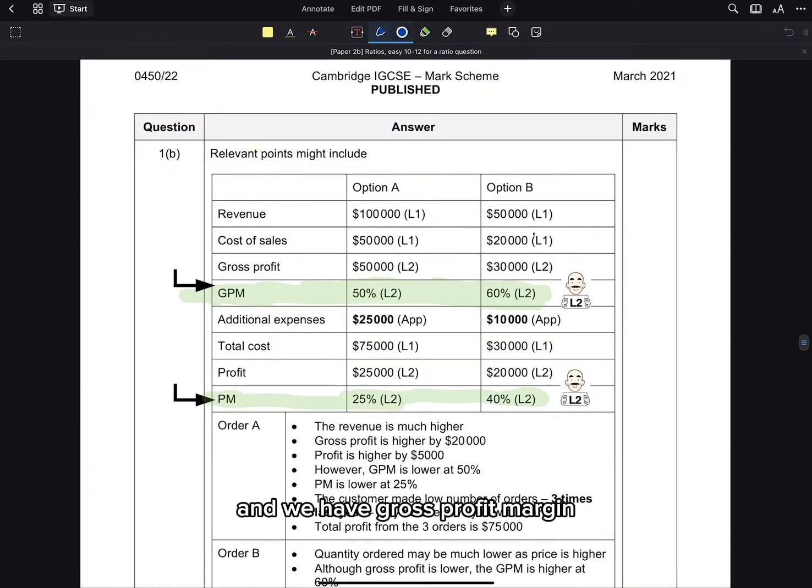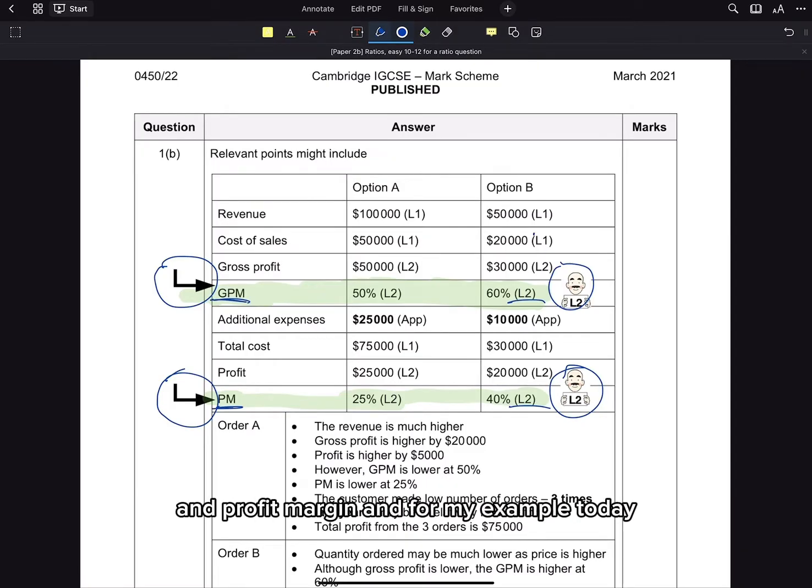and we have gross profit margin and profit margin as our level 2 answers. The GCSE wants a level 2 answer in order for you to get the higher marks. So the ones that come out the most are both gross profit margin and profit margin. And for my example today, I'm going to be using gross profit margin.